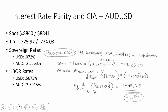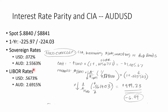Here's all the information needed to do covered interest arbitrage in Australia. The spot price for the Australian Dollar is 88.40 bid, 88.41 ask, with one-year pips of negative 225.97 bid and negative 224.03 ask. Sovereign rates in the U.S. are 7.2 basis points; in Australia for one-year maturity, 2.5563%. LIBOR rates: U.S. 56 basis points, Australia 269 basis points. The strategy starts with $1,000, borrowing at U.S. LIBOR rates, then buying Aussies in the spot market, buying the Australian bond, and when the bond comes due, selling those Australian bond proceeds forward to get back to dollars using the forward market.